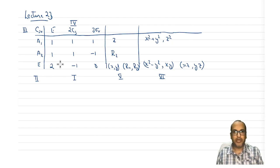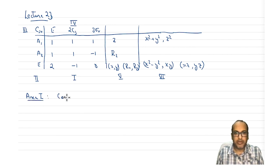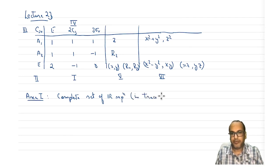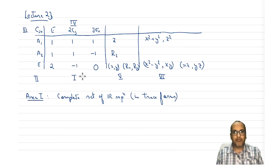Let us divide the character table into different areas: area 1, area 2, area 3, area 4, area 5, and area 6. This is how most character tables are divided. Area 1 we already know — it is a complete set of irreducible representations in trace form, that is, the traces of these matrices. Area 1 we are well versed with.